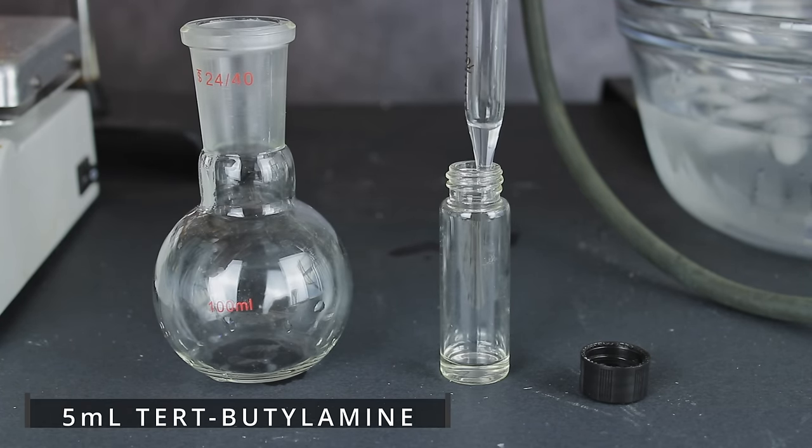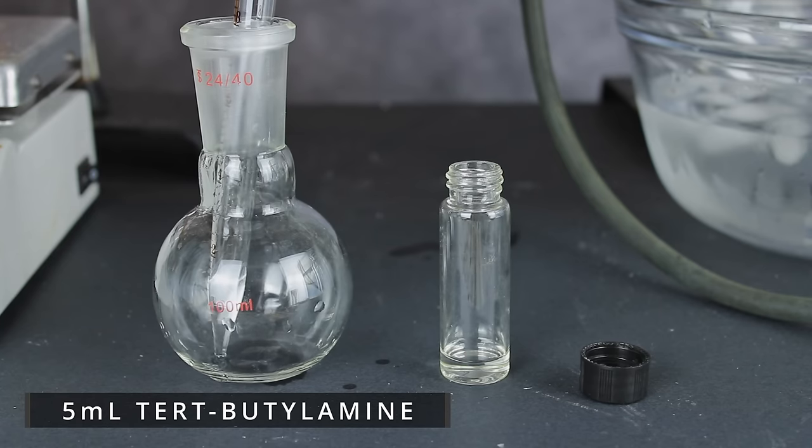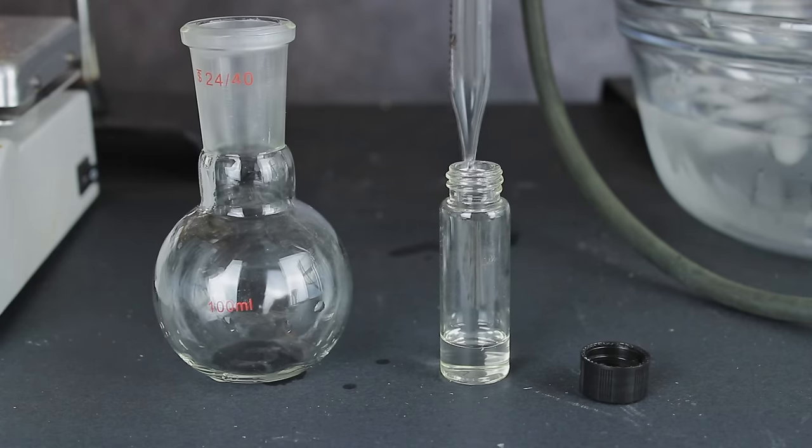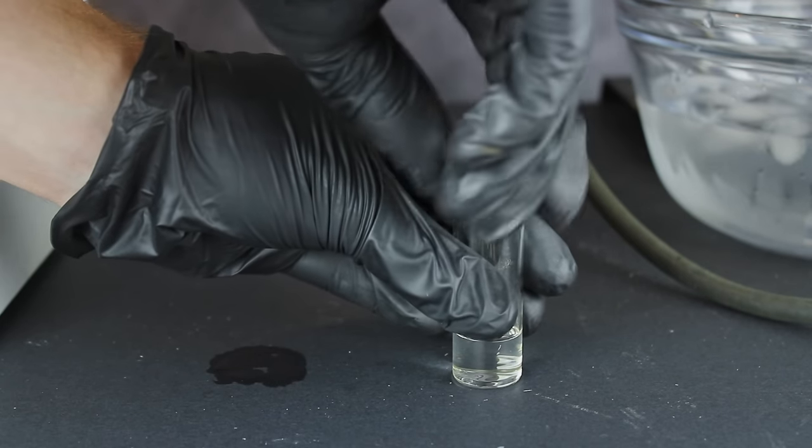In the end, I came out with just over 5 milliliters of crude tert-butylamine. The major contaminant here is water, which won't really affect anything, so I'm okay with it. If I had more product, I would try to re-distill it to get the 40 to 50 degree fraction by itself, but with such a small amount, I felt better just keeping it as is.